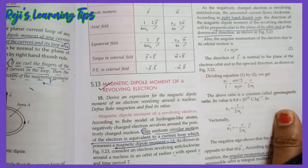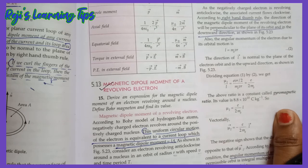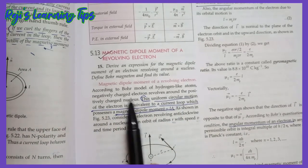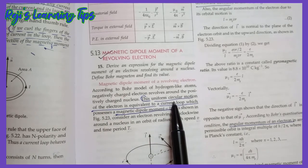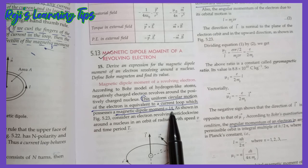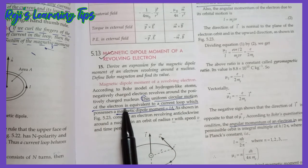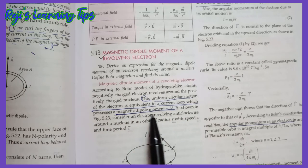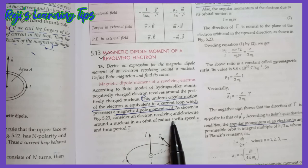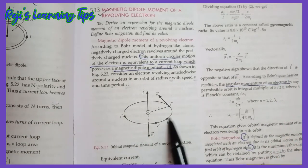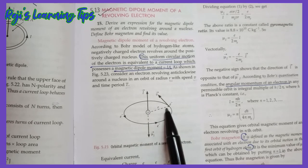The next important topic is the magnetic dipole moment of a revolving electron. According to the Bohr model of hydrogen-like atoms, negatively charged electrons revolve around the positively charged nucleus. This uniform circular motion of the electron is equivalent to a current loop which possesses a magnetic dipole moment M equals I times A. Consider an electron revolving anticlockwise around a nucleus in an orbit of radius r with speed v and time period T.